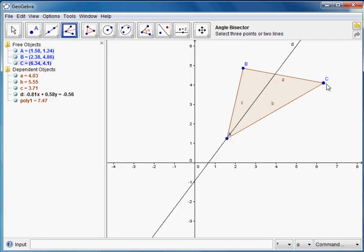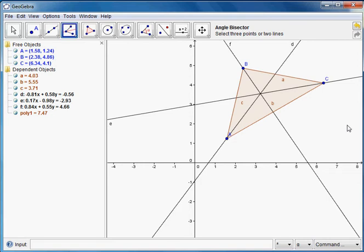If I do B, C, A, or A, C, B, it will bisect C, and then A, B, C, or C, B, A to bisect there, and there's the incenter.